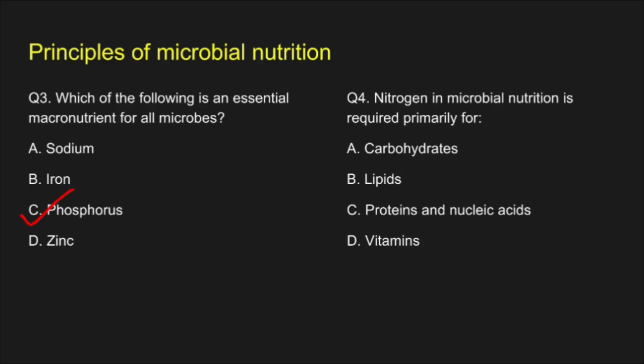Question 4. Nitrogen in microbial nutrition is required primarily for — A. Carbohydrates, B. Lipids, C. Proteins and Nucleic Acid, D. Vitamins. The correct answer is option C: Proteins and Nucleic Acid.